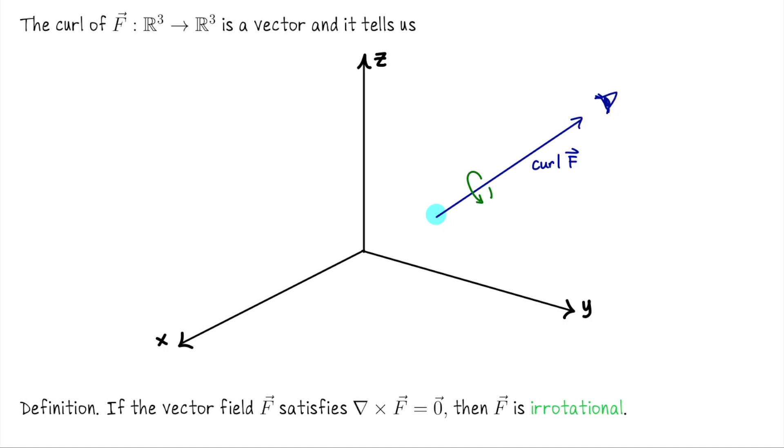If the curl is zero, we wouldn't observe any spinning, and in fact we have a special name for that. If you have a vector field whose curl is zero, we say that vector field is irrotational.